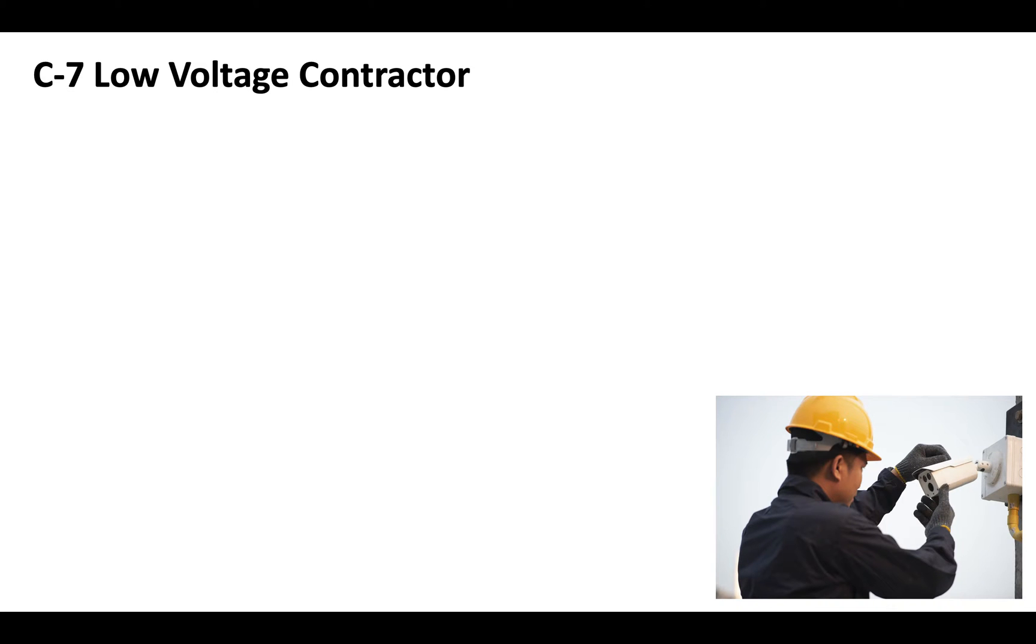Now the C7 low voltage contractor is an electrical license for contractors specializing in work under 91 volts.